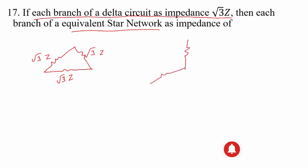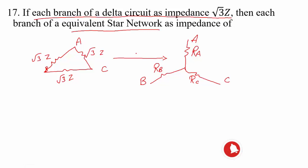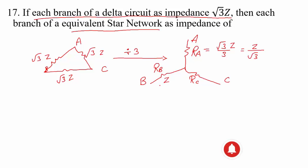Let me name the impedances and terminals as A, B, C, and the star impedances as Ra, Rb, Rc. We know that when all impedances are equal in a delta network, converting delta to star simply divides by 3. So Ra = √3·Z / 3 = Z/√3. Similarly, Rb = Z/√3 and Rc = Z/√3.